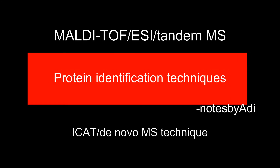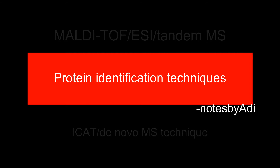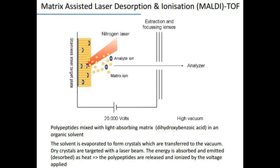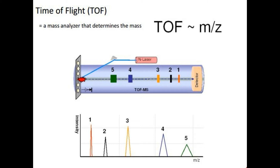We can also look at protein identification techniques. One of the first techniques is matrix-assisted laser desorption and ionization (MALDI), accompanied with TOF, which is the time of flight. In this diagram, we mix a polypeptide with an organic solvent and place it on a target plate. A nitrogen laser is then shot at it, and the analyte and matrix ions that exude are analyzed under the mass spectrometry machine.